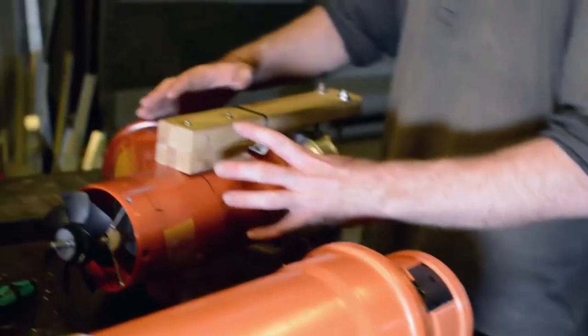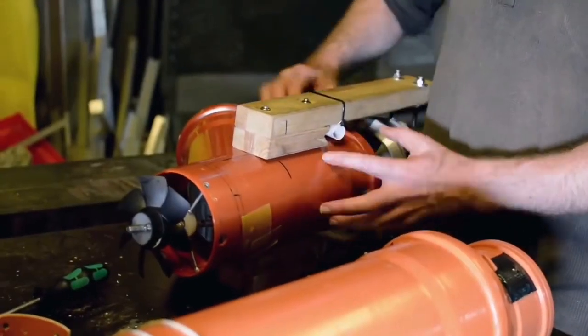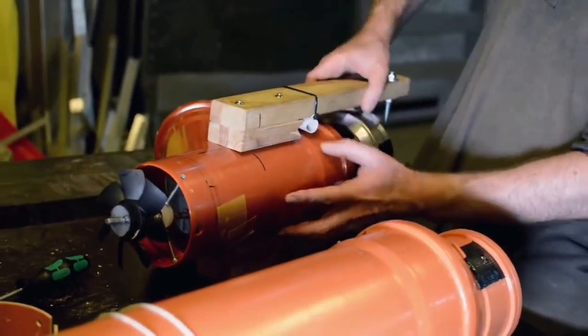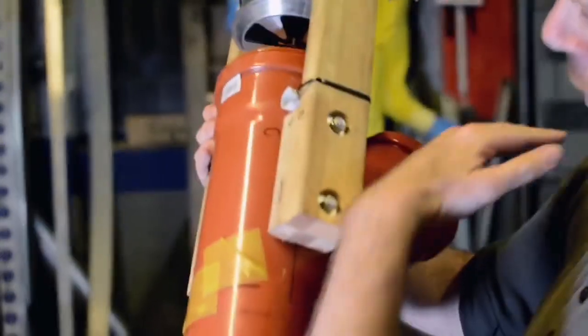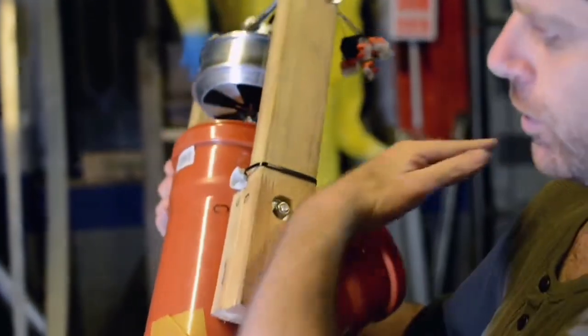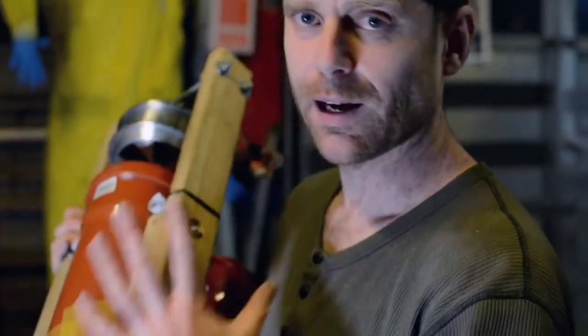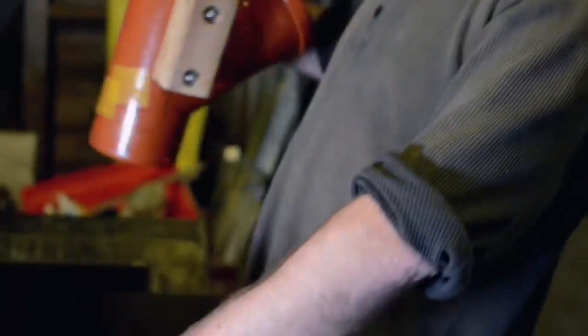Also in here I had some polystyrene sort of like just cut to shape to kind of like block up this sort of back section, just so that the water would come through smoothly and cleanly. I haven't had a chance to directly compare with and without that to see how much help it makes, but on the next build I will. And those are the most of the improvements that I sort of tried, the ones that helped and the ones that didn't.